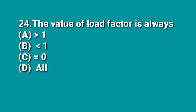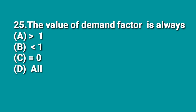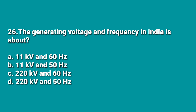The next question: the value of load factor is always — A: greater than 1, B: less than 1, C: equal to 0, D: all of the above. The load factor is always less than the maximum demand, so it is always less than 1 — A is the correct answer. The generating voltage and frequency in India is 11 kV at 50 Hz — that is the correct answer, as India does not generate at 60 Hz.